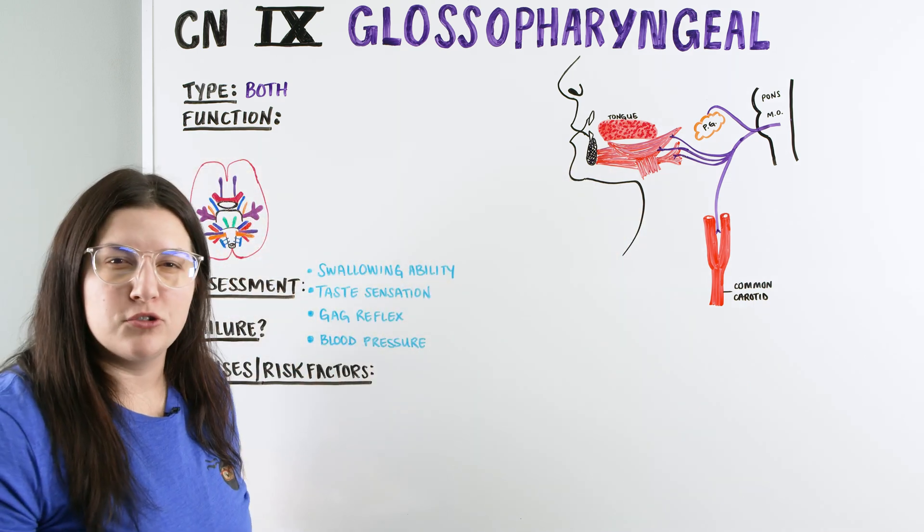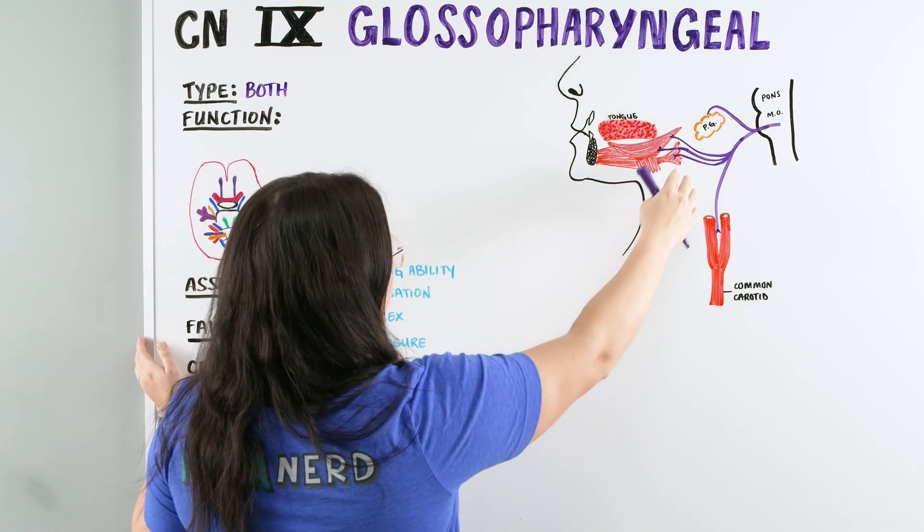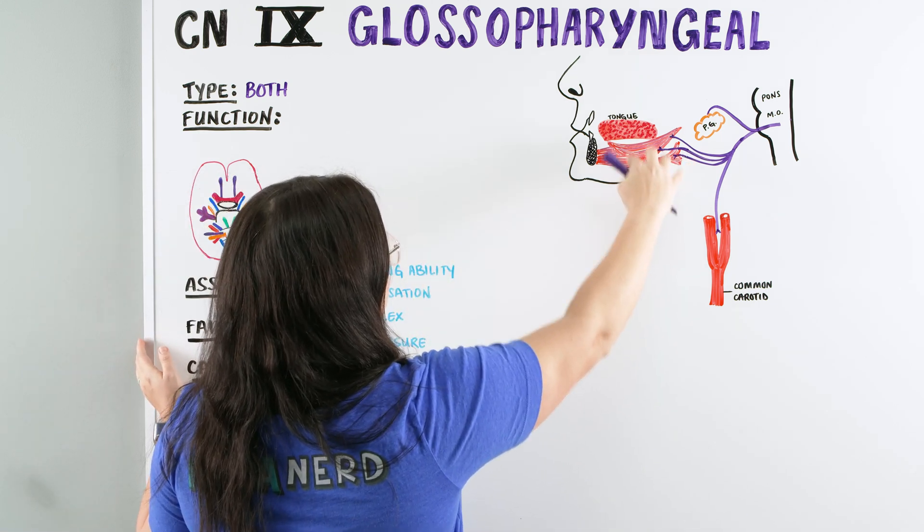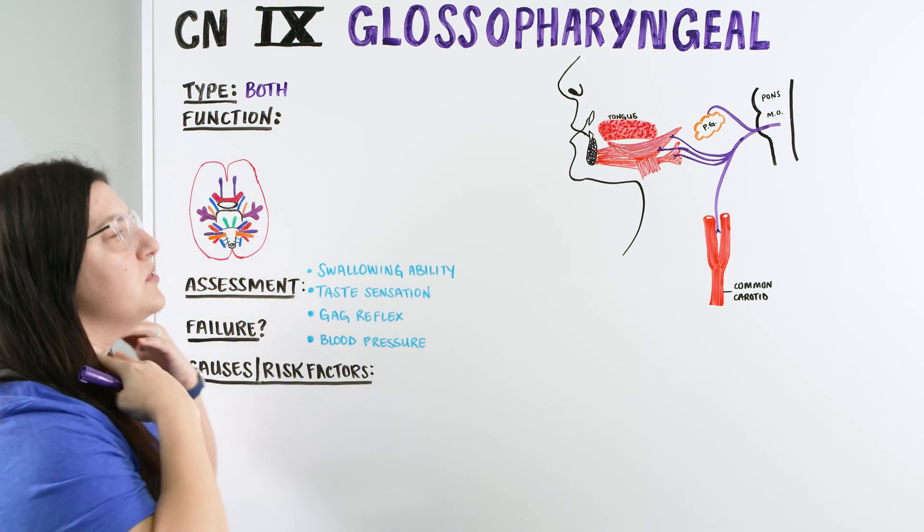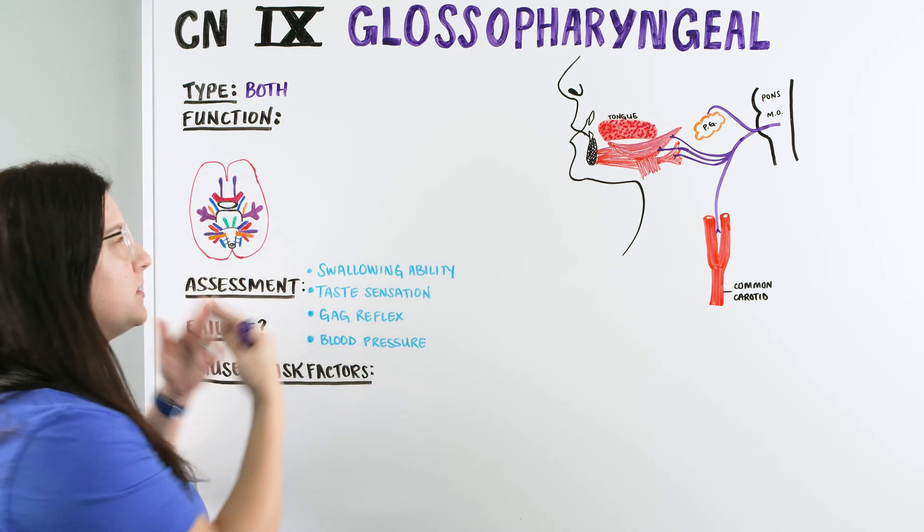So the first one actually has to do with swallowing. The nerve plays a part in those pharyngeal muscles where it's able to elevate and move and allow the patient to swallow safely. So the first function is swallowing.